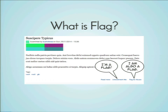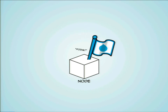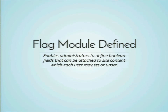The flag module — this is a picture of a rendered node on Drupal 8. It looks like any other node, but there are two little weird links at the bottom. Those are flag links. What does this allow us to do? We have a node, and we have a user that comes along and sticks a flag in it. Other users come along and add their own flags. It enables administrators to define Boolean fields that may be attached to site content which each user may set or unset. It's different than a checkbox because a checkbox only gets set once — usually only the node creator or editor can do that. This is for every user.